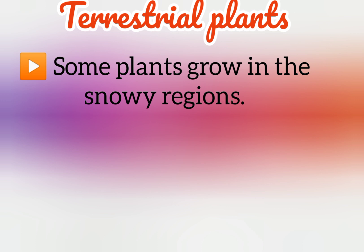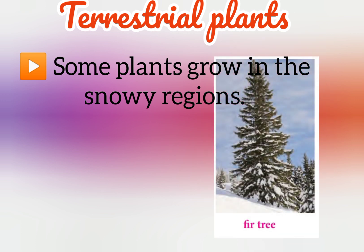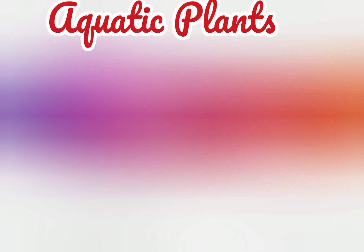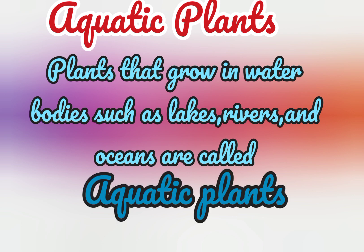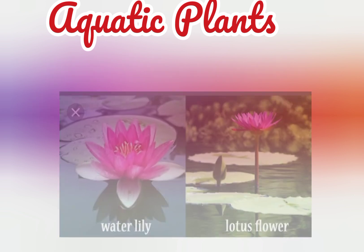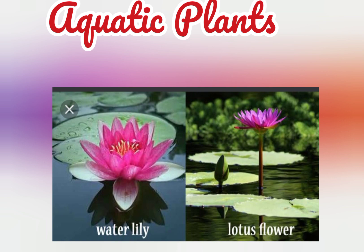Some plants grow in the snowy region — for example, firetree. Next, aquatic plants — vellatheil valaidunna sashyengalde. Plants that grow in water bodies such as lakes, rivers and oceans are called aquatic plants. Examples: lotus and waterlily.